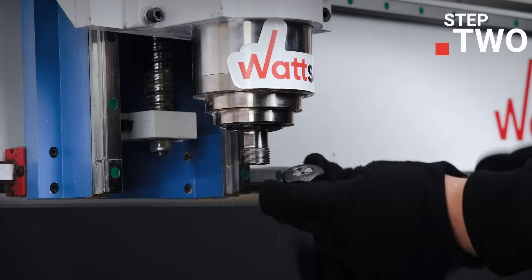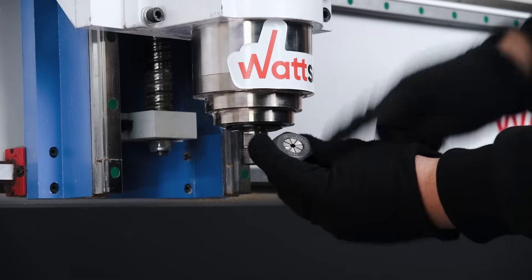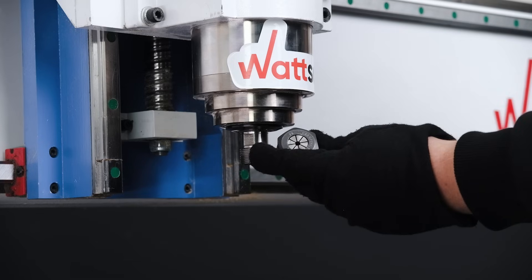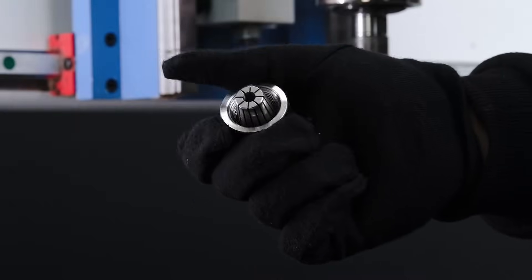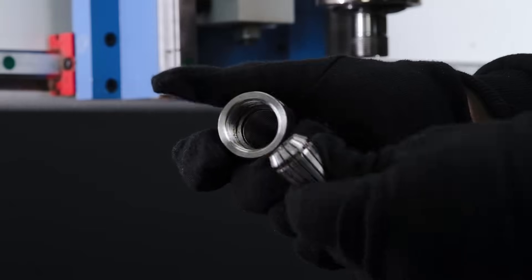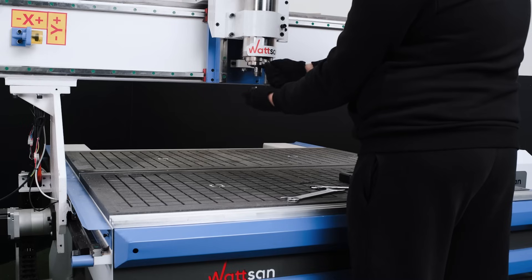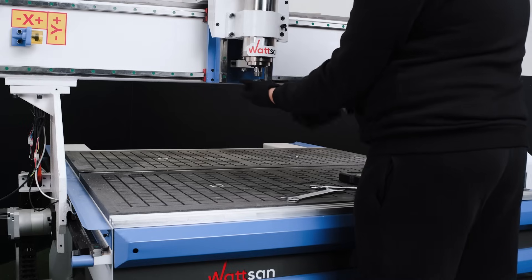Step 2: Either insert a new end bit with the appropriate diameter or replace the collet and then insert the tool. To remove the collet, pull it sideways, not upward, and after a characteristic click, you'll be able to easily remove the current one and install a new one.